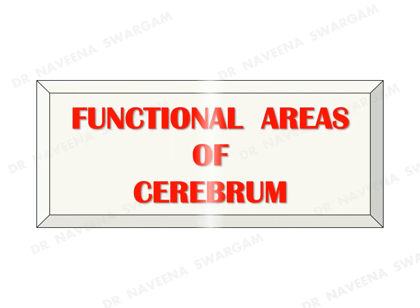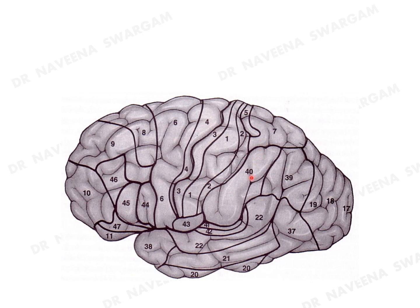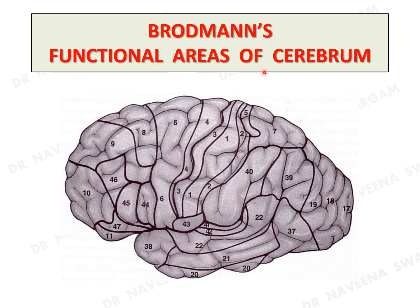Welcome to this video tutorial on functional areas of the cerebrum. Functional areas of the cerebrum are areas of the cerebral cortex having similarly functioning neurons, which means different areas of the cerebral cortex exhibit different functions. They occupy different gyri on different lobes of the superolateral and medial surfaces of the cerebral hemispheres. They are given numbers by different neurobiologists for functional analysis, out of which Brodmann's functional areas of the cerebrum are frequently used for reference.